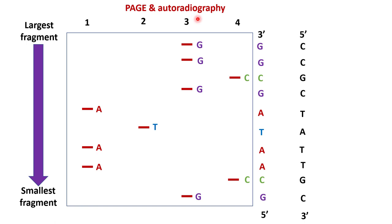Now let's interpret the result. After gel electrophoresis, the smallest fragment runs to the bottom and the largest fragment is found on top. We have to read the sequence from bottom to top, and the sequence is 5'-G-C-A-A-T-A-G-C-G-G-3'. This sequence is synthesized after PCR, so the template strand in our hand would be 5'-C-C-G-C-T-A-T-T-G-C-3'.